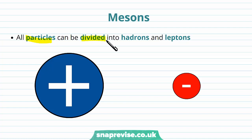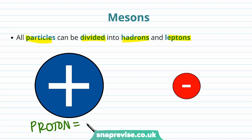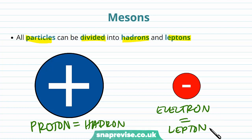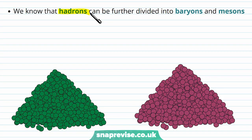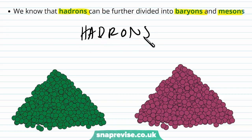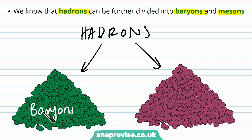All particles can be divided into hadrons and leptons. A proton is an example of a hadron and the electron is an example of a lepton. Hadrons can be further divided into baryons and mesons — two subgroups we will now explore.